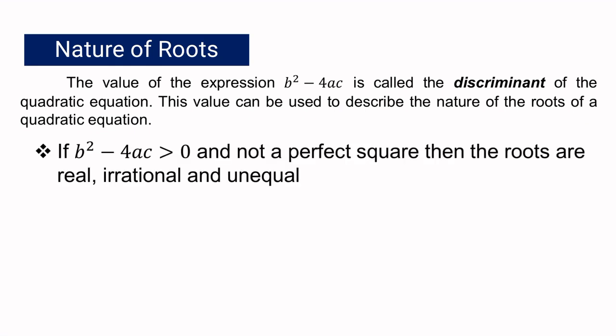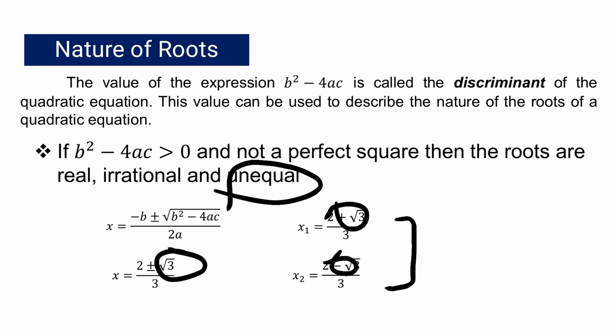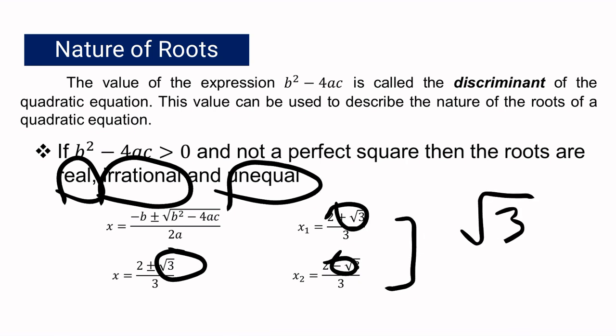If the discriminant is greater than 0 but not a perfect square, then the roots are real, irrational, and unequal. Using 3 as the value of the discriminant — it is greater than 0 but 3 is not a perfect square — x sub 1 becomes 2 plus square root of 3, all over 3, and x sub 2 becomes 2 minus square root of 3, all over 3. The plus and minus tell us the two roots are unequal. Since 3 is not a perfect square, we still have the radical sign in our roots, making them irrational numbers.